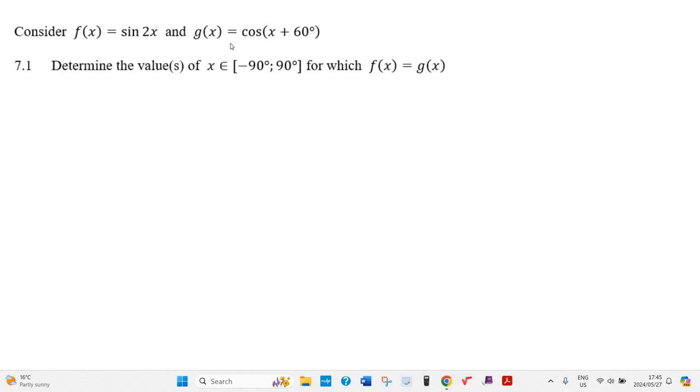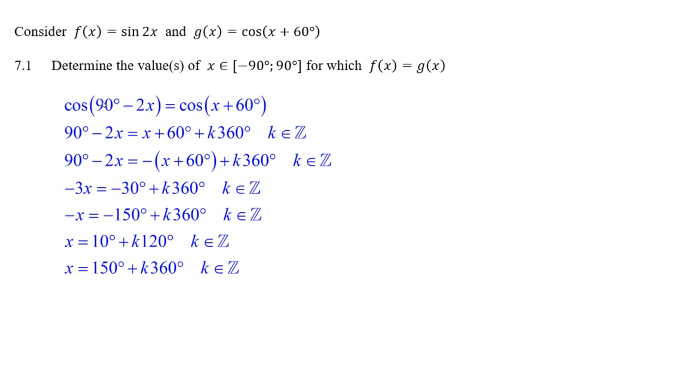They wanted to let f equals g, but there's a big trick here, and it's a cofunction trick. You see, the sine of 2x is really the cosine of 90 minus 2x, and that's how we get started.